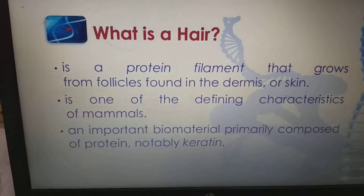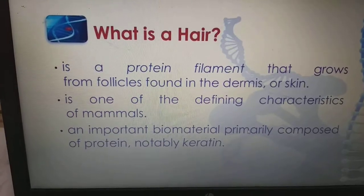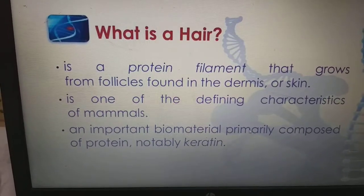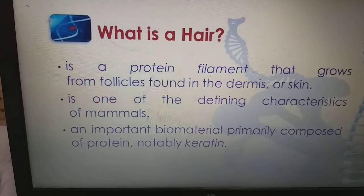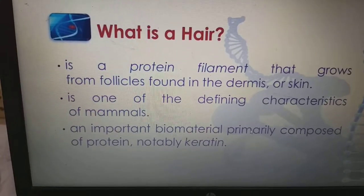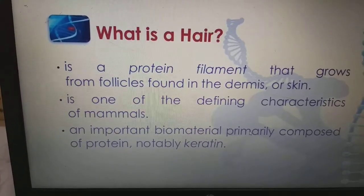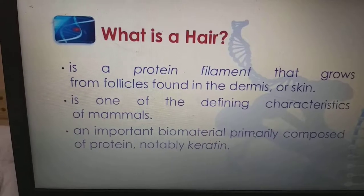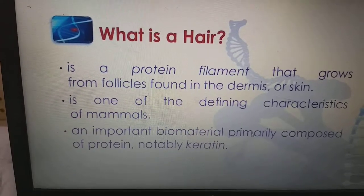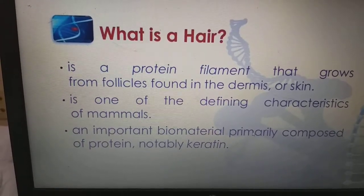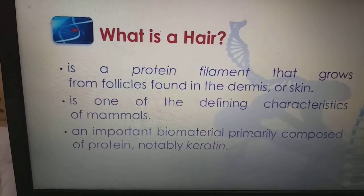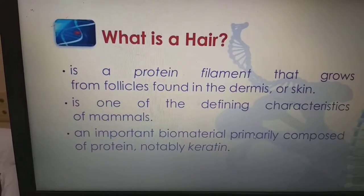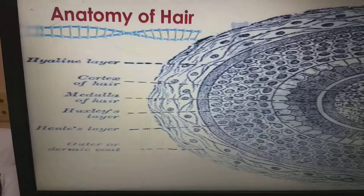Coming to the first: what is a hair? Hair is a protein filament that grows from a follicle found in the dermis or in the skin. It is one of the defining characteristics of mammals — an important biomaterial primarily composed of protein, notably keratin. Keratin is the main ingredient present in the hair as well as the nails.